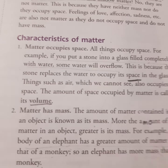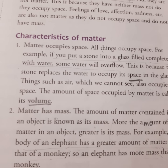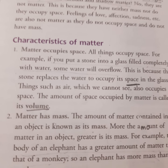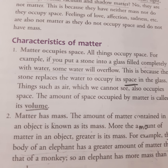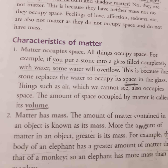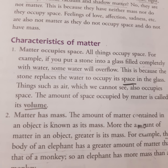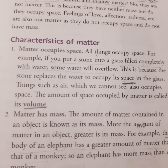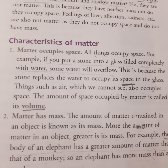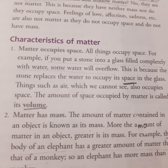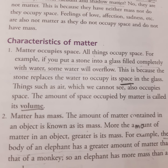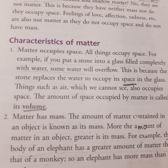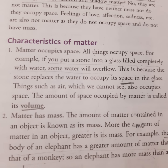Matter is of two types: living and non-living matter. Living matter contains all kinds of plants and animals. Non-living matter includes everything else in the universe, because it does not grow, move or reproduce on its own. Non-living matter can be of two types — natural and manmade matter.